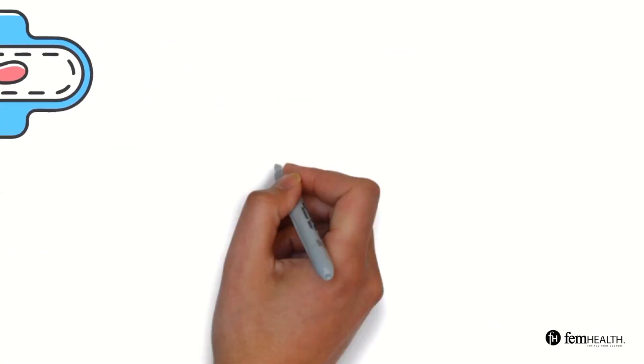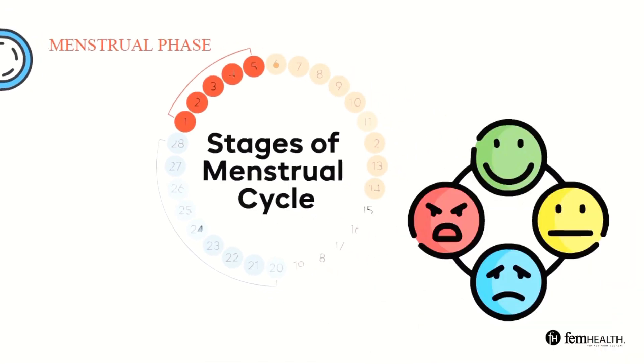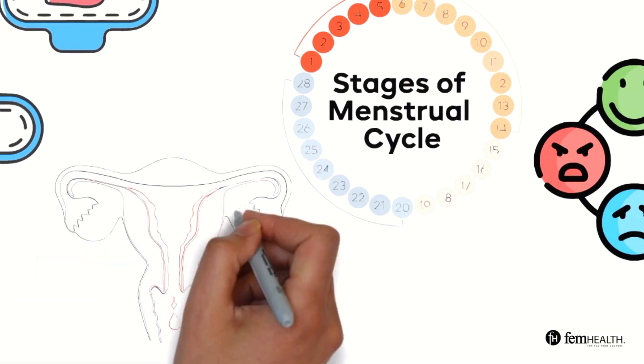Now let's talk about phase one which is the menstrual phase and how your mood can be impacted during this phase. The menstrual phase is typically days one to five. During this time the lining of the uterus sheds and leaves the body through the vagina.